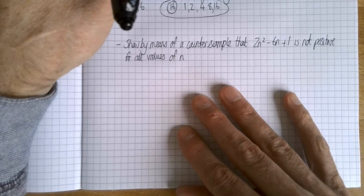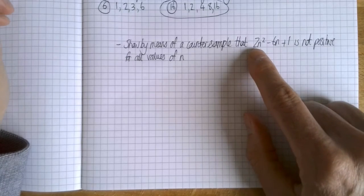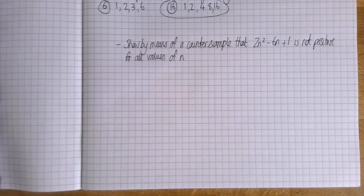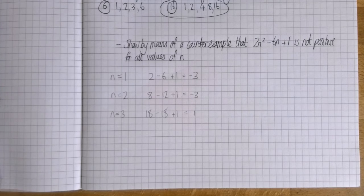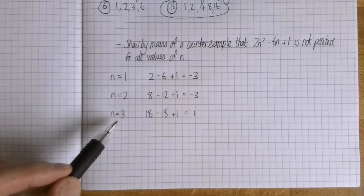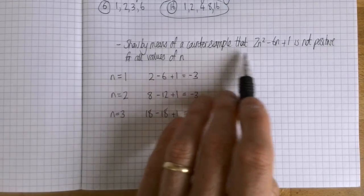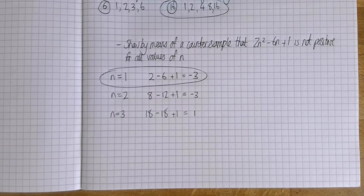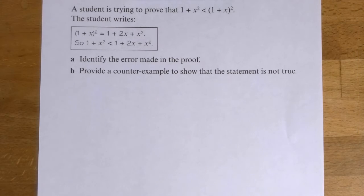And here's a slightly more complicated one. Can you come up with a value of n that means that this is not positive? 2n² - 6n + 1. Pause the video and have a go. Well yeah, I found two straight off. One or two give you an answer that's not positive. Anything bigger than that and you get into the positives. But if you want to show by means of a counter example that it's not positive for all values of n, well bingo I got there straight away. And you could have had two as well and there are other values you could have had.